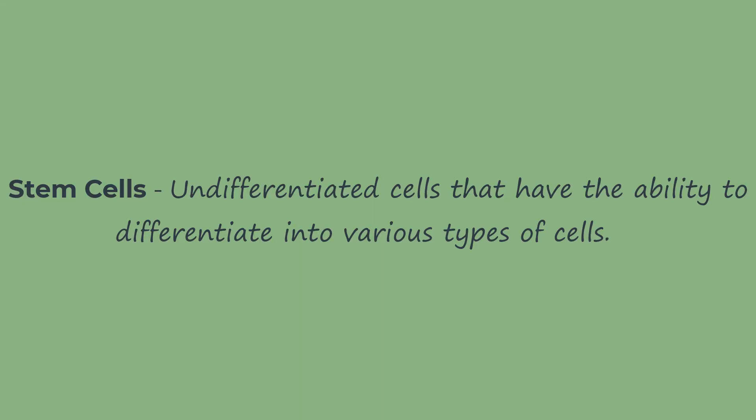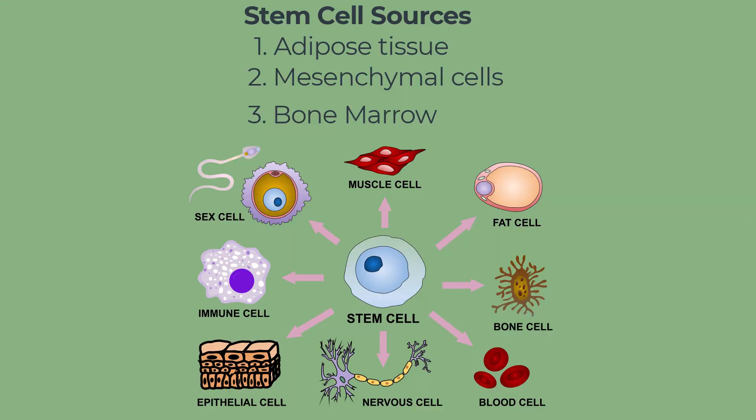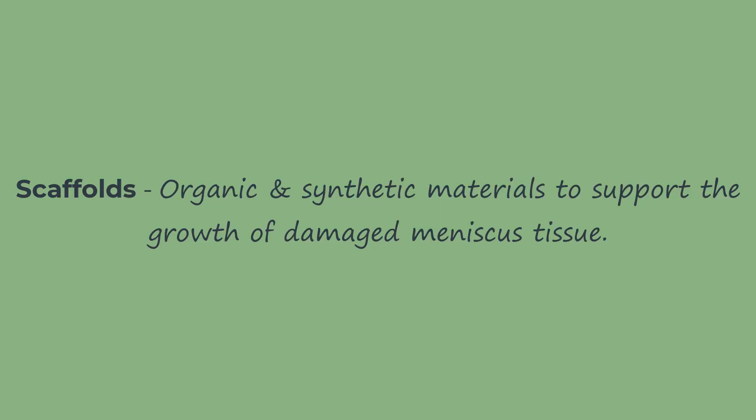Stem cell augmentation involves undifferentiated cells that have the ability to differentiate into various cell types — in this case, knee meniscus tissue. Researchers are using three different sources for these stem cells: adipose tissue, mesenchymal cells, and bone marrow sources. So far, stem cell augmentation is showing positive effects in the lab where meniscus tissue is indeed differentiating and growing, but long-term studies on human subjects are still needed and methods still require improvement.